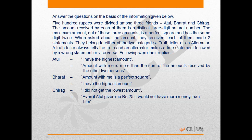This is a problem based on binary logic. Here, 500 rupees were divided among three friends: Atul, Bharat, and Chirag. The amount received by each of them is a distinct three-digit natural number, which means everybody receives at least 100 rupees.